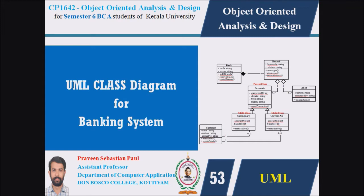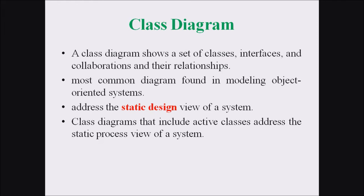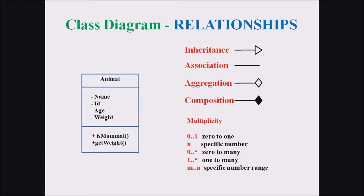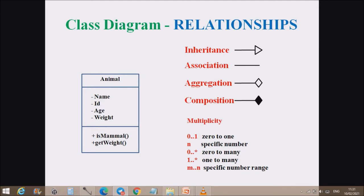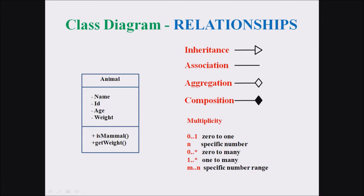In the previous lectures we had discussed class diagrams as well as the relationships. A class diagram shows a set of classes, interfaces and collaborations with their relationships. It is the most common diagram found in modeling of object-oriented systems and represents the static design view of a system. The relationships associated with a class diagram are inheritance, association, aggregation and composition, along with the multiplicity factors.